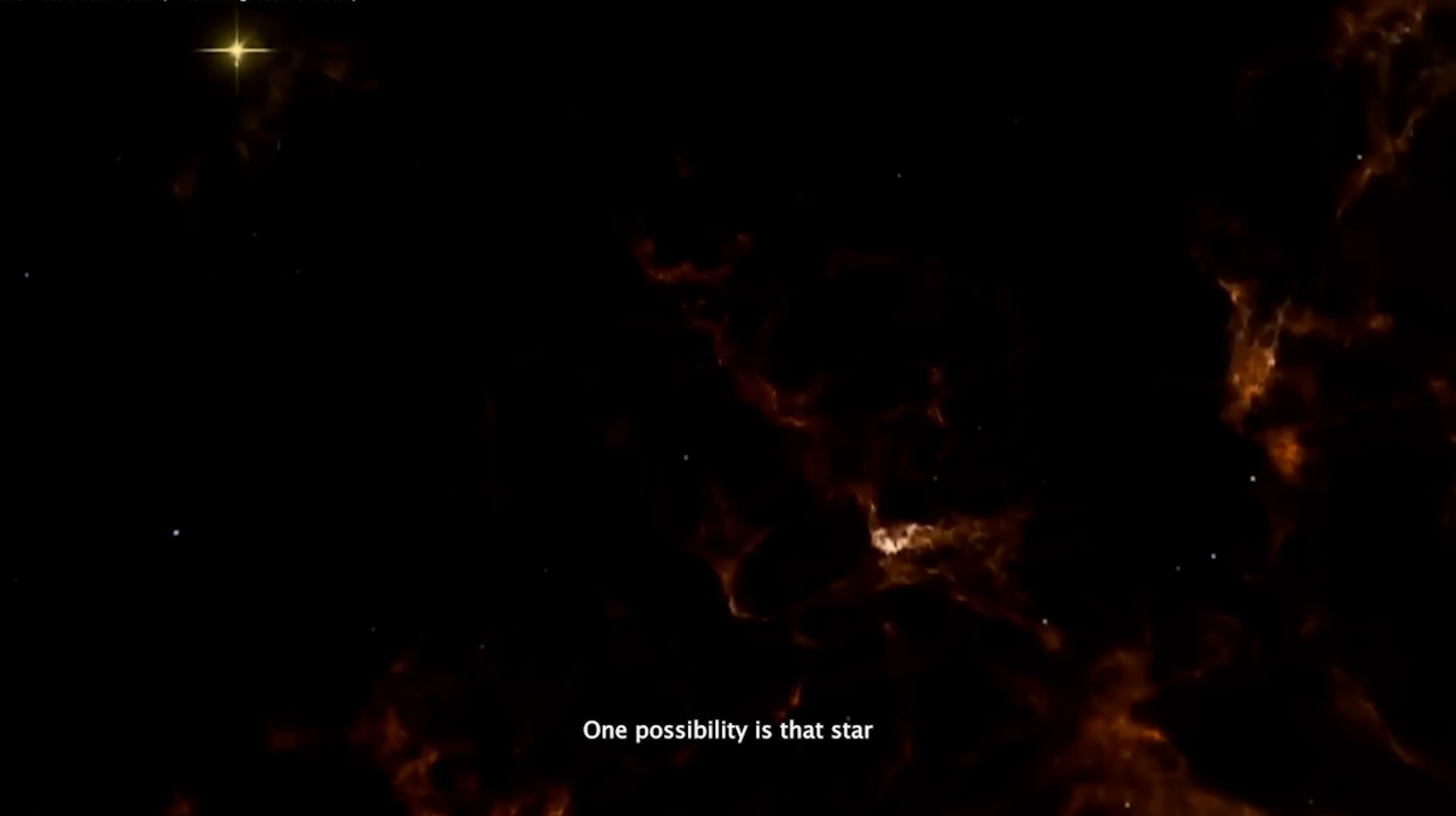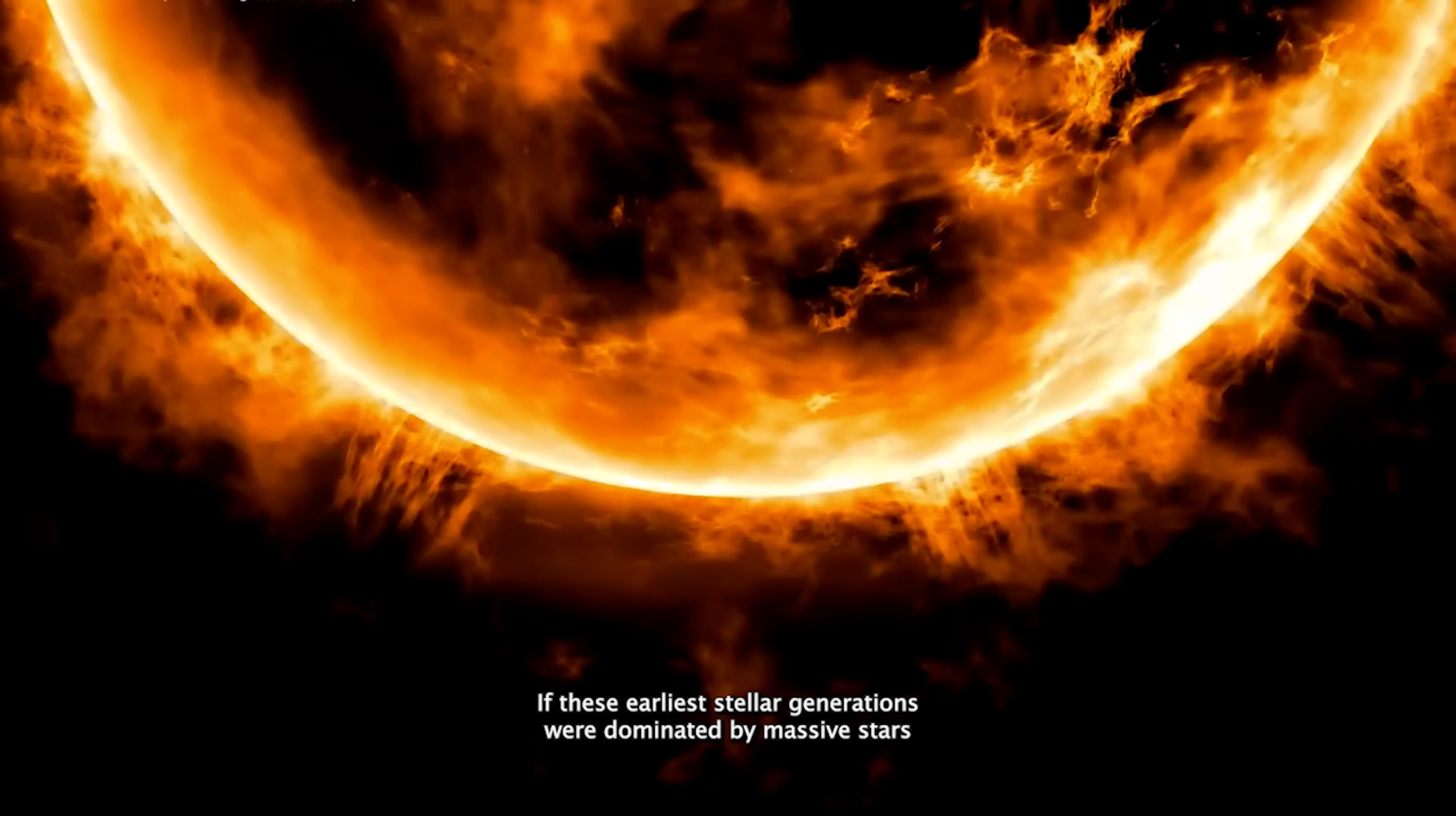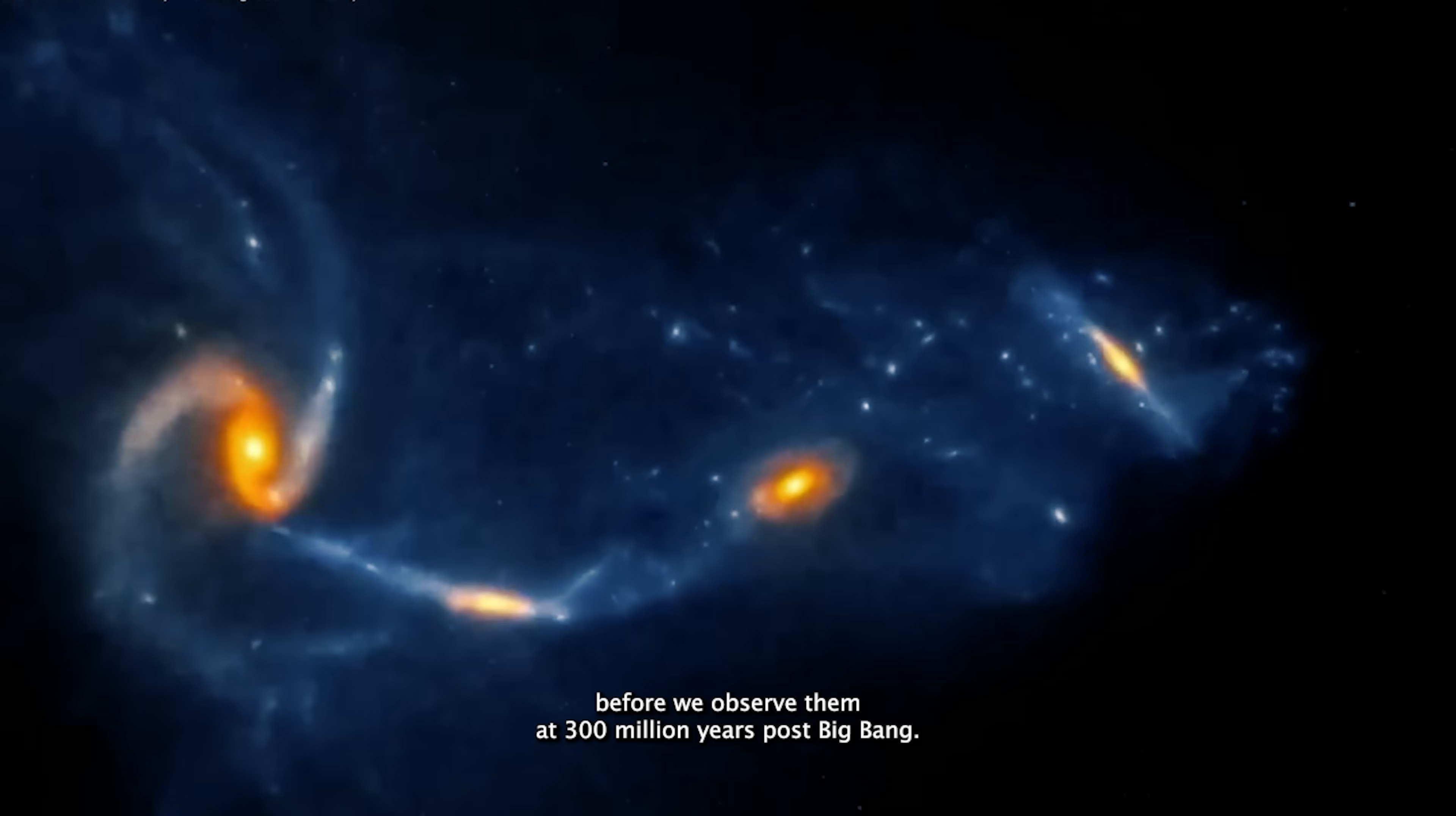One possibility is that star formation in the infant universe was hyper-efficient. The very first stars, known as population 3 stars, are believed to have been extremely massive, possibly hundreds of times the mass of our sun. These giant stars would have burned through their nuclear fuel incredibly fast, likely surviving just a few million years before dying in powerful supernova explosions that scattered heavy elements like oxygen into the surrounding space. If these earliest stellar generations were dominated by massive stars rather than smaller ones like our sun, a situation astronomers call a top-heavy stellar population, this could have drastically sped up the chemical enrichment of their host galaxies. Another intriguing possibility is that galaxies may have started forming even earlier than our current models predict, potentially as soon as 100 million years after the Big Bang.